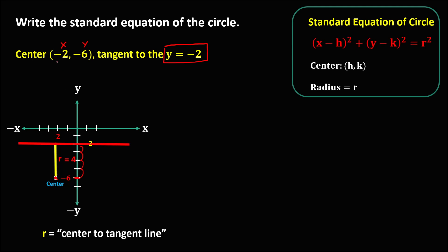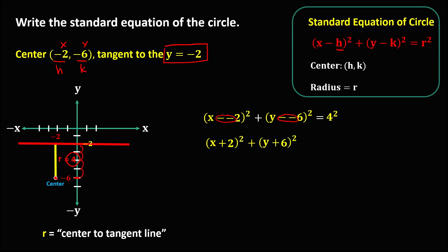To write the standard equation, from the center: h is negative 2 and k is negative 6. So we have (x minus (−2))² + (y minus (−6))² = 4². Both double negatives become positive, giving us (x + 2)² + (y + 6)² = 16. This is the standard equation for this circle.